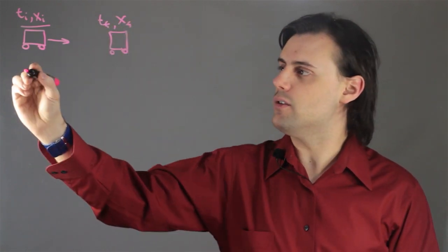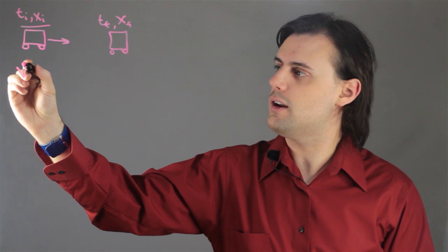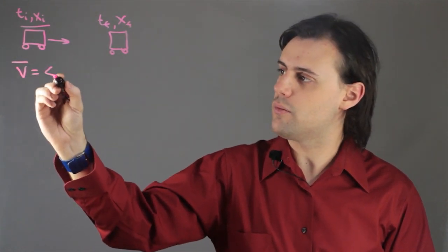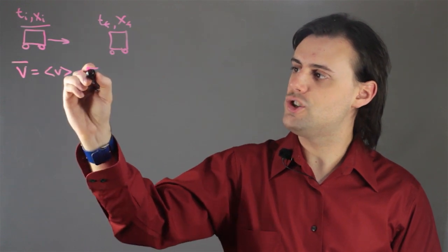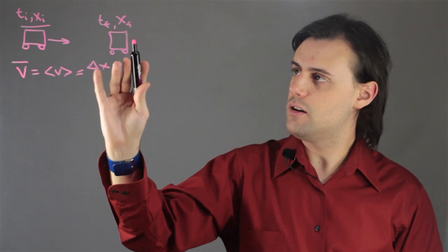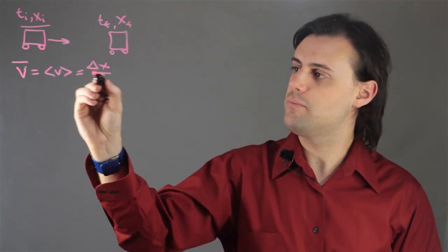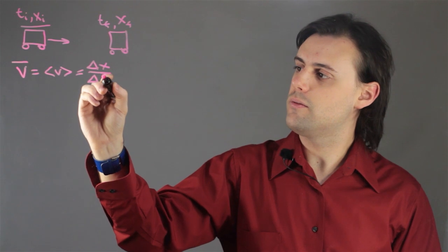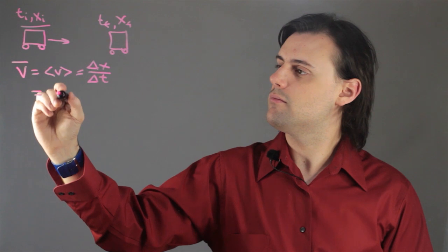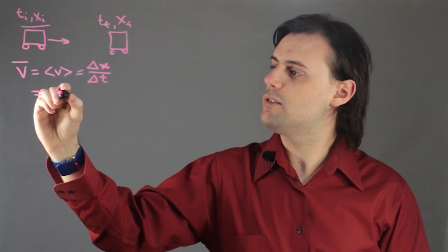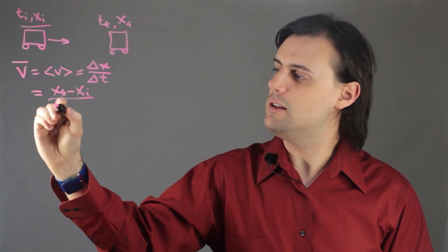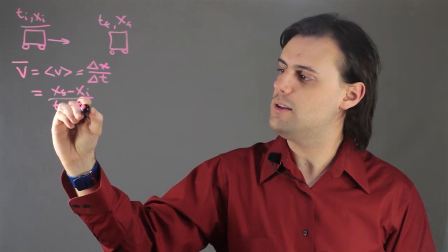The definition of average velocity, typically denoted as v with a bar over it, sometimes with brackets, is the change in position from the final time minus the initial time over the change in time. So this is simply equal to x sub f minus x sub i divided by t sub f minus t sub i.